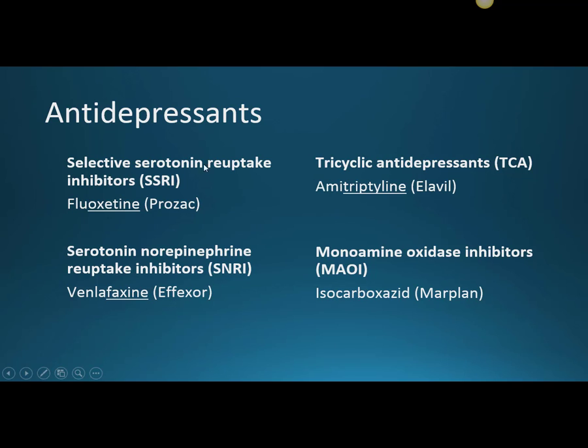The next class is Tricyclic Antidepressants, or TCAs. They work the same way that SNRIs work by inhibiting the reuptake of serotonin and norepinephrine, but they're named after their shape, which is the three-ring structure that we see with Tricyclic.